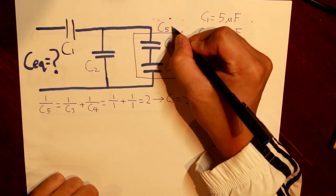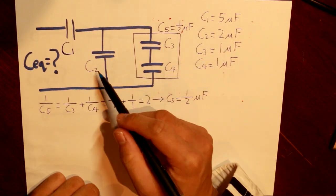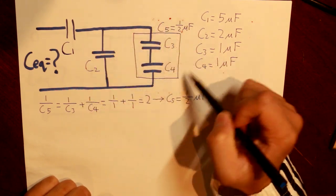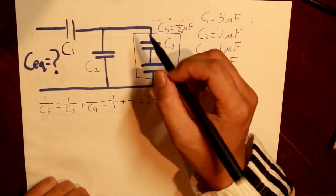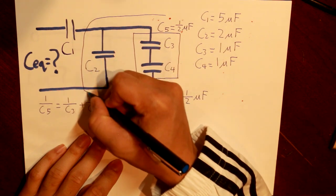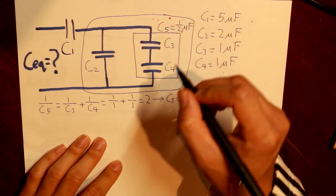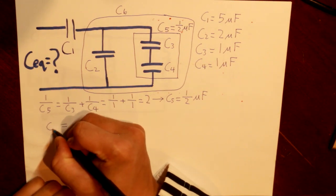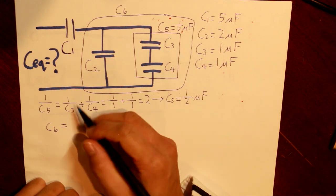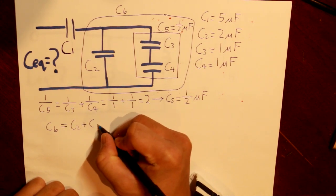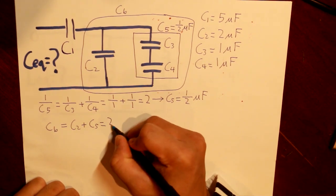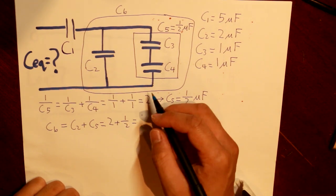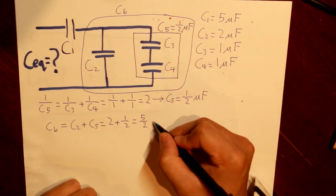Now C5 is in parallel with C2. Since they're in parallel, we simply add them: C6 = C2 + C5 = 2 + 1/2 = 5/2 microfarads.